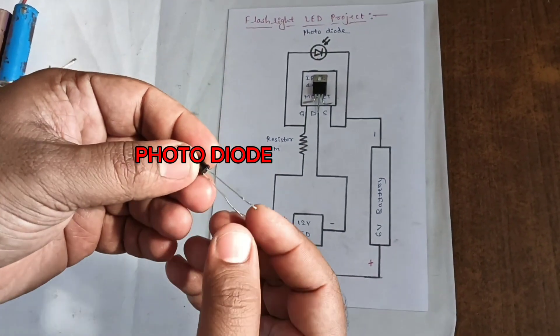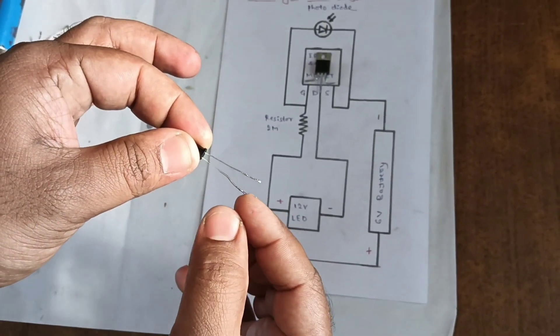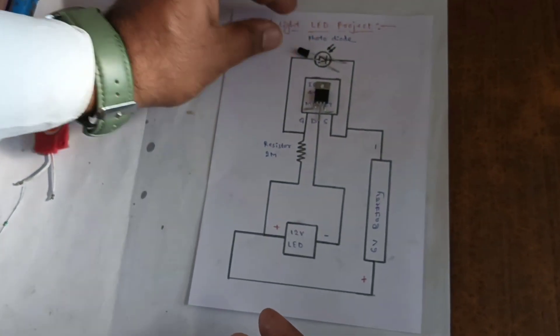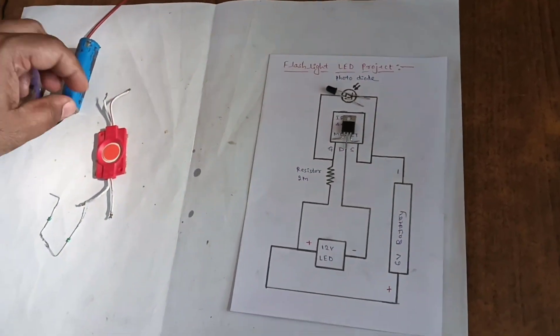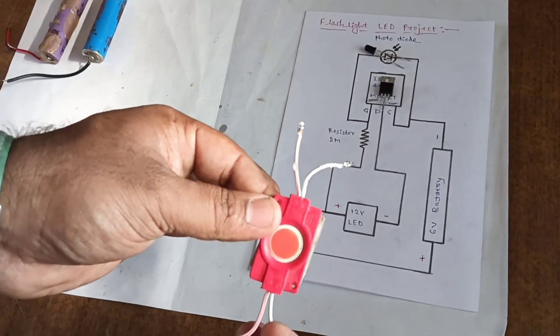Long length leg is positive and short length is negative. Next in this project we have taken 12 volt LED.